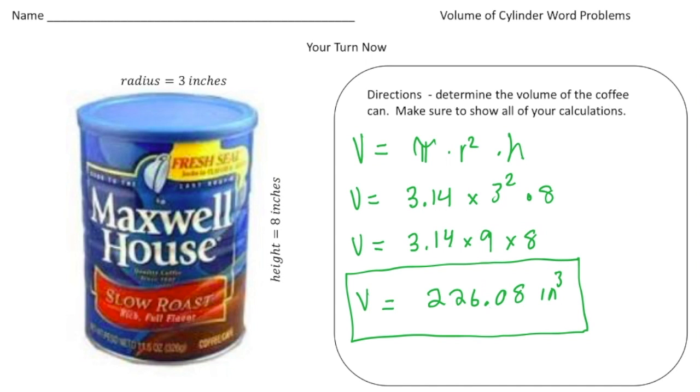All right, welcome back. So let's see how you did with this practice problem. This question really was: what's the volume of the coffee can, right? So I got an answer of 226.08 cubic inches.